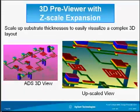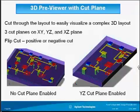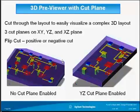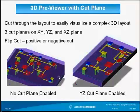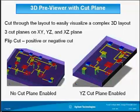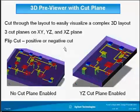The next feature is called the 3D viewer cut plane. It allows you to cut any of the X, Y, or Z planes and move them forward and backward in order to see all the interconnects going through the substrate and inspect that everything is connected as intended. You can drag it and keep sliding it back and forth in any direction. The flip cut can be positive or negative, meaning you can cut from top to bottom or bottom to top, or in any other direction and plane.